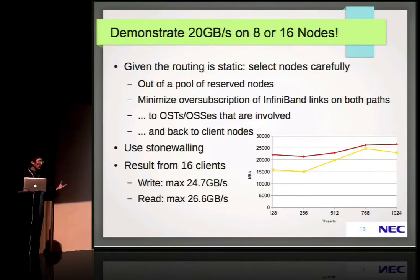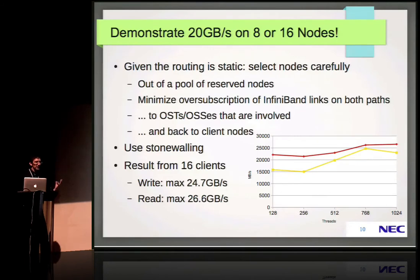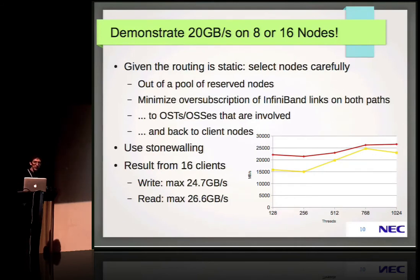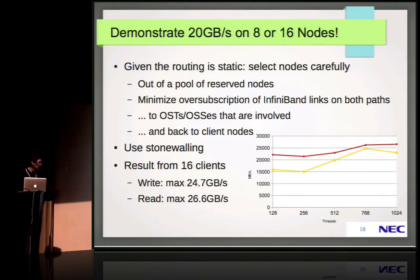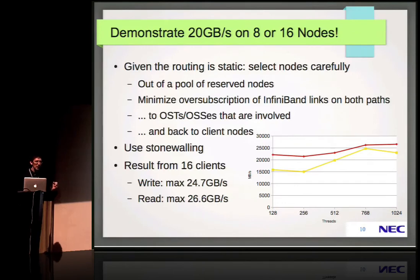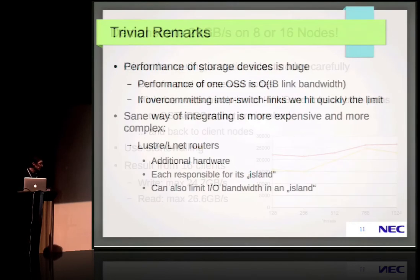We could deal with this to demonstrate performance. What we did was request a bigger pool of reserved nodes, then analyze the routes and select nodes which had a minimal number of oversubscribed inter-switch links on the path towards the file servers and back — because both routes can be different. Suddenly the performance was much higher. We reached more than expected: 24.7 gigabytes per second in write and 26 gigabytes per second in read. An interesting side note is that you need quite many threads for this type of storage to reach its peak performance.